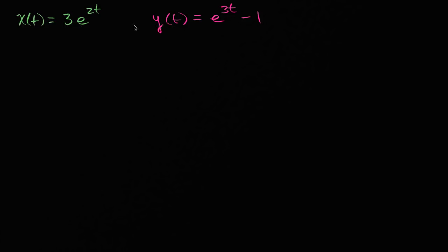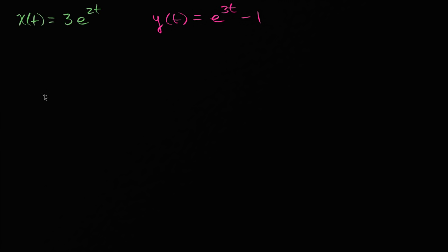Here we have a set of parametric equations where x and y are both defined in terms of t. If you input all the possible t's into these functions and then plot the corresponding x and y's for each t, this will plot a curve in the xy plane. What I want to do in this video is figure out the first derivative of y with respect to x and the second derivative of y with respect to x, and in both cases it's going to be in terms of t.